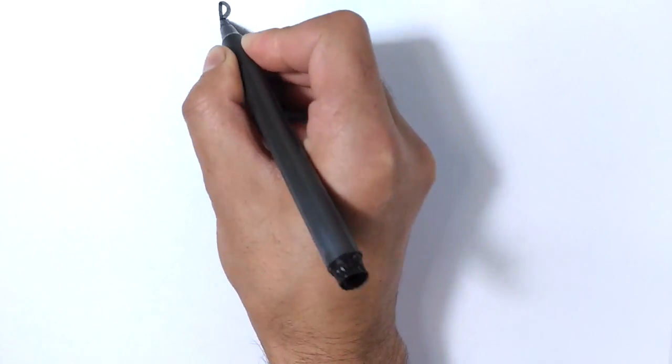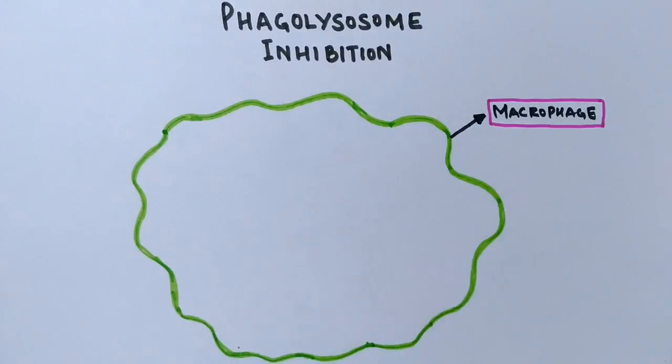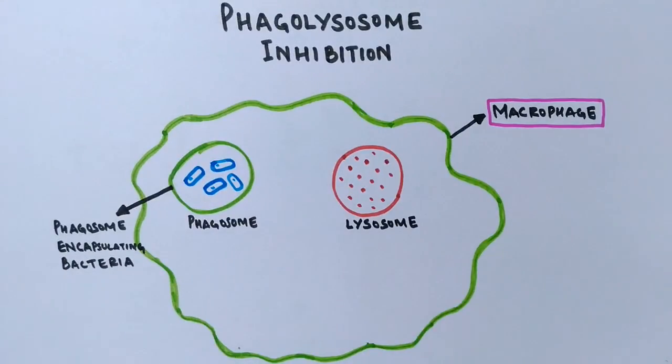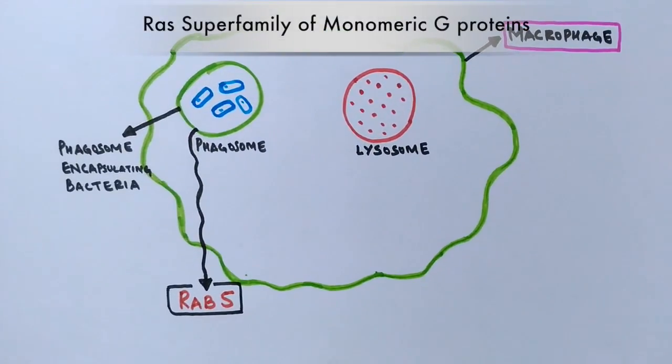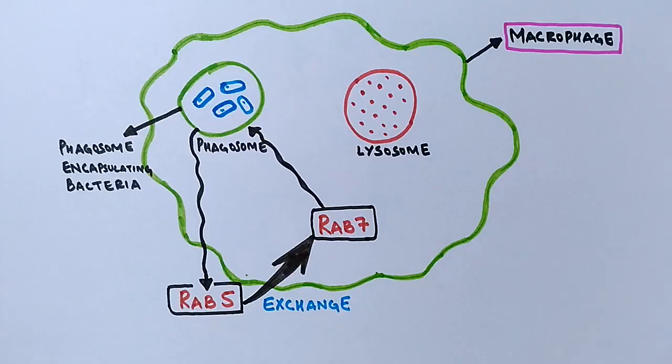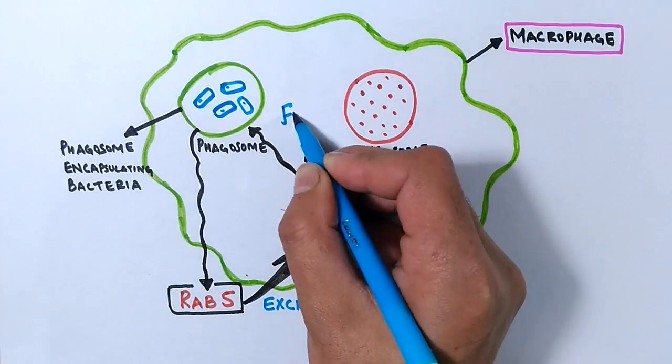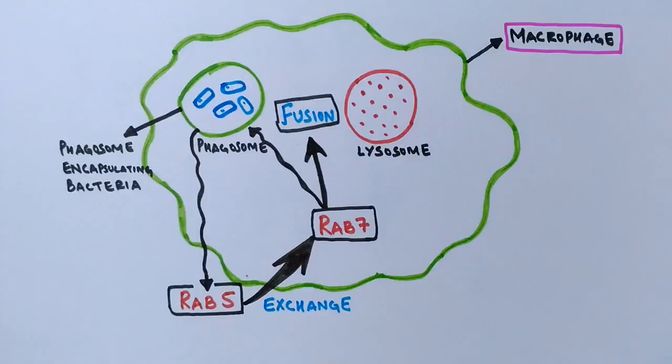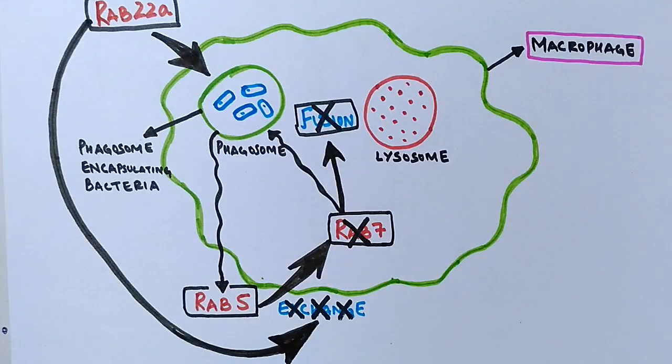Now the second survival method used by mycobacterium to evade our immune system is the inhibition of phagolysosome formation. In this process the phagosome and lysosome inside the macrophage are devoid of fusion. For a fusion to occur the phagosome has got RAB5 protein on it and it exchanges this RAB5 protein for RAB7 protein which marks the phagosome for fusion with lysosome. Once RAB5 is exchanged for RAB7 it initiates this pathway for phagolysosome formation. But the phagosome encapsulating bacteria recruits RAB22A protein which prevents the RAB5 exchange for RAB7, thus inhibiting the formation of phagolysosome.